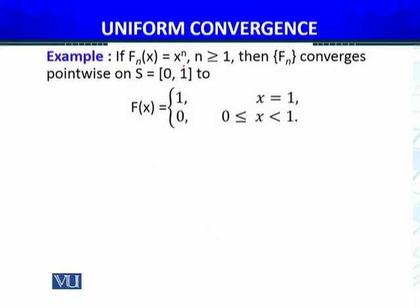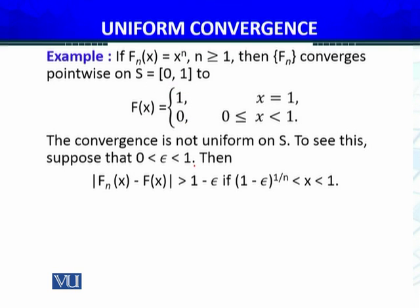Example pe apply karte hain. If f_n(x) equals x raise to power n, n greater than equals to 1, then f_n converges pointwise on s. S agar aapke paas yeh ho, f(x) yeh pehle humne discuss kiya hua hai, ke f(x) equals x equals 1 pe 1, x zero or one ke dermyan hai, toh yeh zero. Isko pointwise jo hai, woh converge karte hain. The convergence is not uniform on s. Is s pe convergence jo hai, yeh uniform nahi hai.